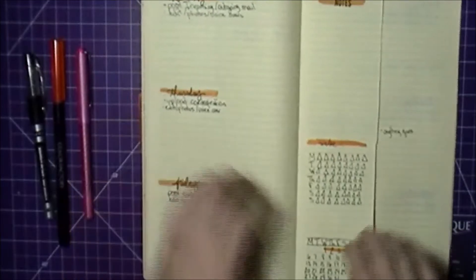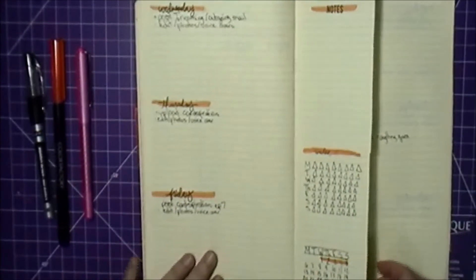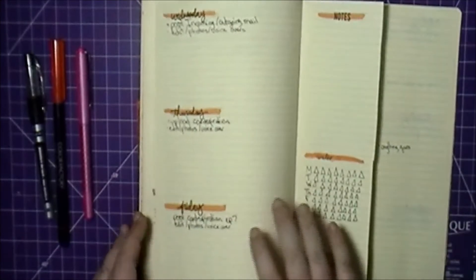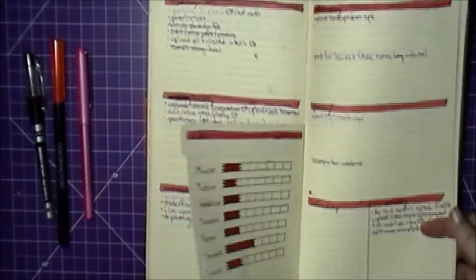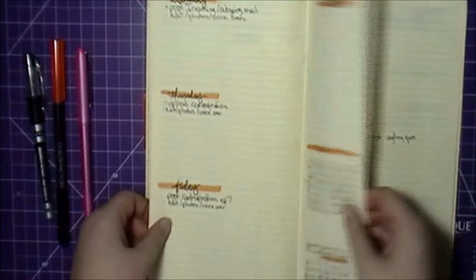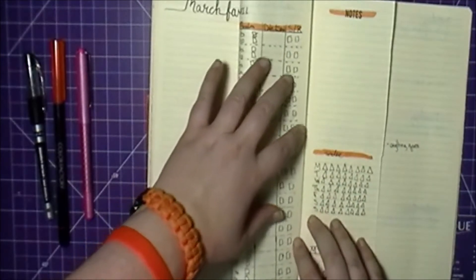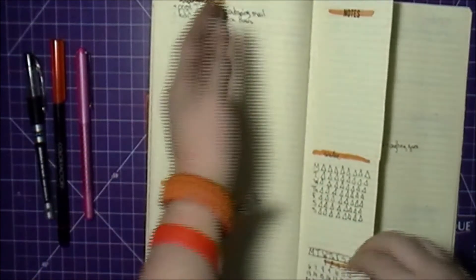The next page we get into the weekly spreads. I included some more Dutch doors. Last month I've done the Dutch doors this way, so I decided to change it up. All I did for that, I didn't really measure it, I just folded the page in half, creased it, and then cut along the crease.